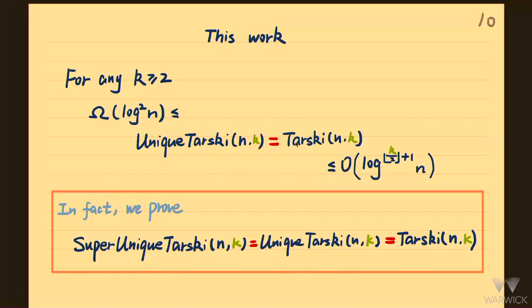This is interesting because if Tarski has a unique fixed point, then the two paths from the least and greatest point must meet in the middle — otherwise there would be at least two fixed points. This result doesn't directly improve the lower or upper bound, but it helps both simultaneously. To improve the upper bound it suffices to work on super unique Tarski, and to improve the lower bound it suffices to use super unique Tarski to construct hard instances. The more interesting part is the new kind of reduction we use to reduce Tarski to super unique Tarski.